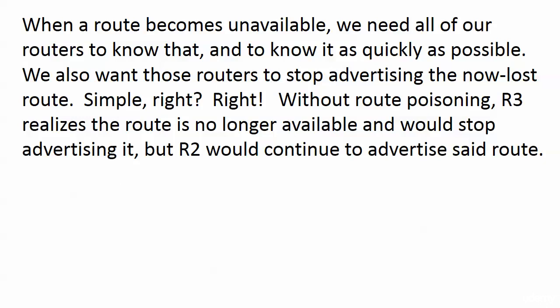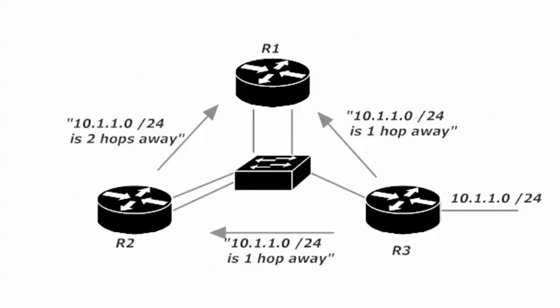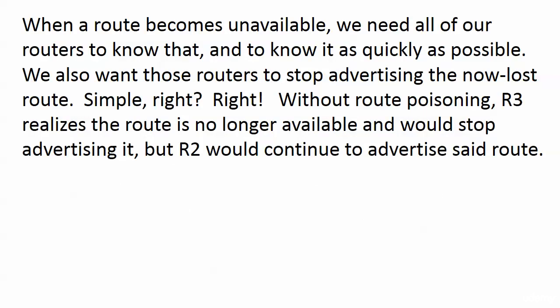When a route becomes unavailable — let's say 10.1.1.0/24 goes down — we want all the routers to know about it as quickly as possible. We want that convergence. Router 3 needs to tell everyone it doesn't know where that network is anymore. What many people, including myself years ago, thought is that router 3 would just stop advertising it. Well, there's a problem there.